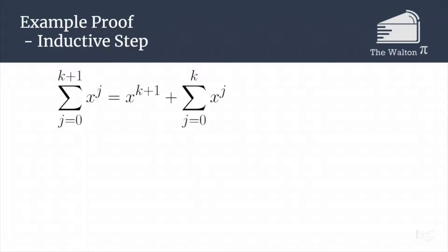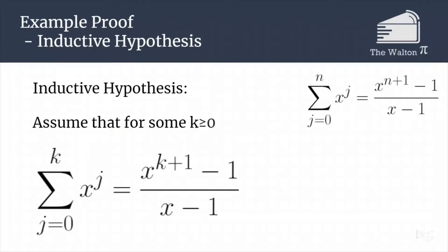We start by looking at the sum from j equals 0 to k plus 1 of x to the j. We can pull out the k plus 1 term, so we have x to the k plus 1 plus the sum from j equals 0 to k of x to the j. We can use our inductive hypothesis to replace the sum from j equals 0 to k of x to the j with x to the k plus 1 minus 1, all over x minus 1.